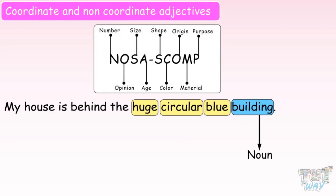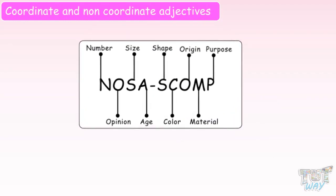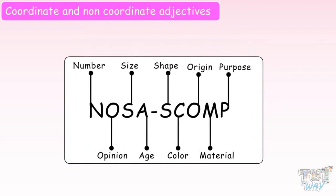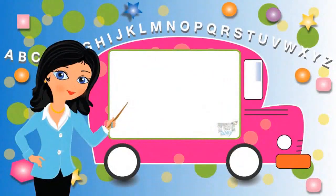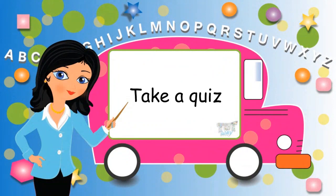So friends, today we have learnt what are coordinate adjectives and what are non-coordinate adjectives, and also the sequence that adjectives must follow before a noun or pronoun. We will learn more about this adjective sequence and many more examples in our next section. Now you may go ahead and take a quiz to learn more. Bye-bye!